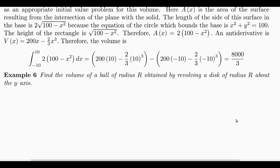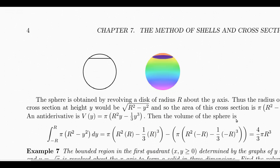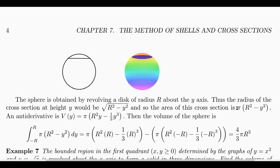Now we'll find the volume of a ball of radius R obtained by revolving a disk. We look at a cross-section at height Y, and the radius at height Y would be the square root of R squared minus Y squared. The area of this cross-section is pi times that quantity squared, and integrating that gives 4 thirds pi R cubed.